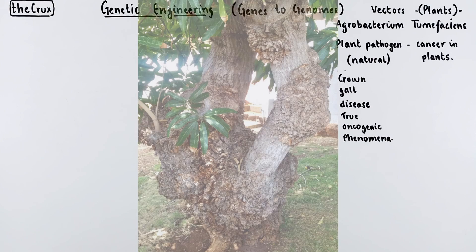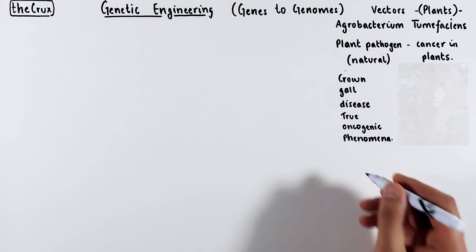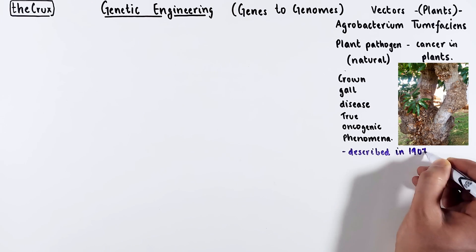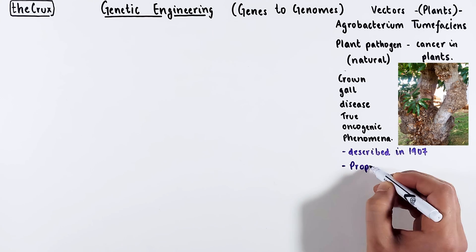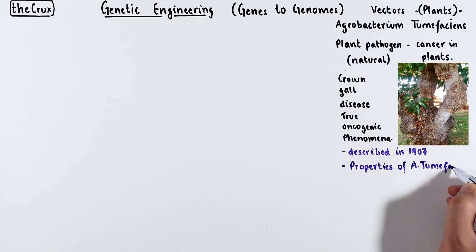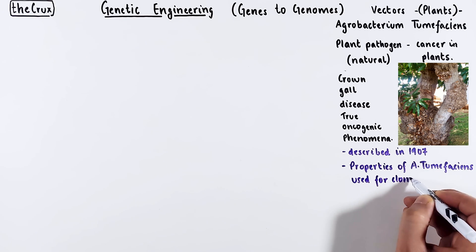You have very likely seen trees or plants with knots or swollen nodules as if the plant is infected. Those are called galls, resulting from this plant cancer. This was first scientifically described in 1907, and the properties of the pathogen were first used in cloning in the early 1980s.